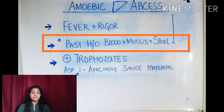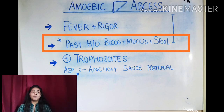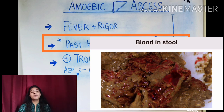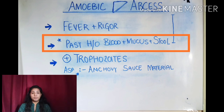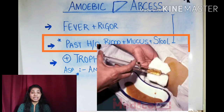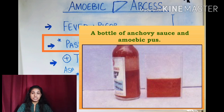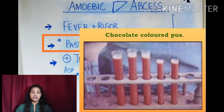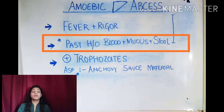Two most important things in amoebic liver abscess: first, when we ask the patient about the history of consistency and frequency of stools, we will find blood-mixed stool — blood and mucus mixed in the stool — in the past history, which may or may not be present currently. Second, when we do aspiration of that material, it will be anchovy sauce material. When we see that characteristic material, we can confirm it is amoebic liver abscess, making hepatomegaly secondary to it.